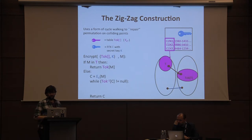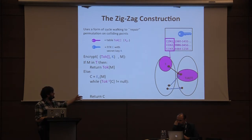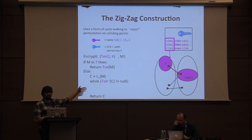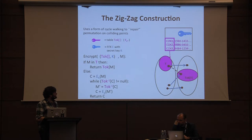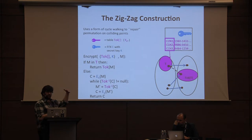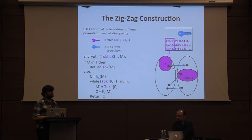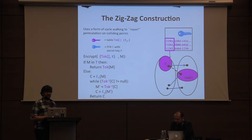The third, more complicated case is when you encrypt a point not in T whose image collides with the image of some point in T. Here we decrypt to find the point in T that caused this collision, and then re-encrypt that point with E. This is slightly reminiscent of cuckoo hashing.